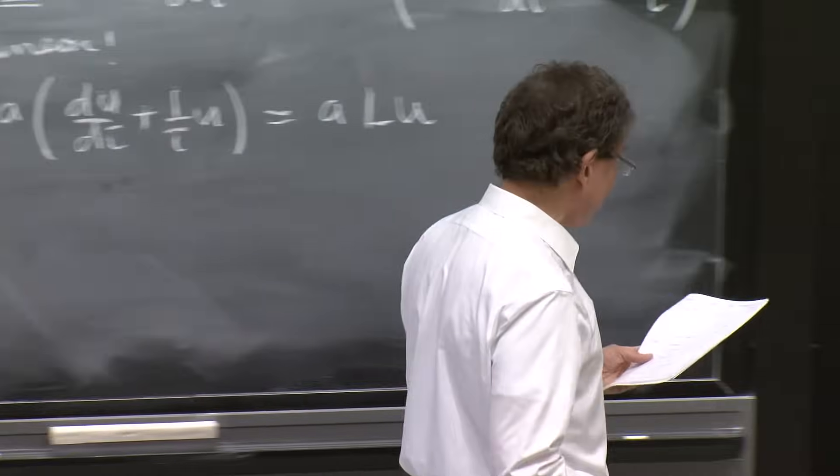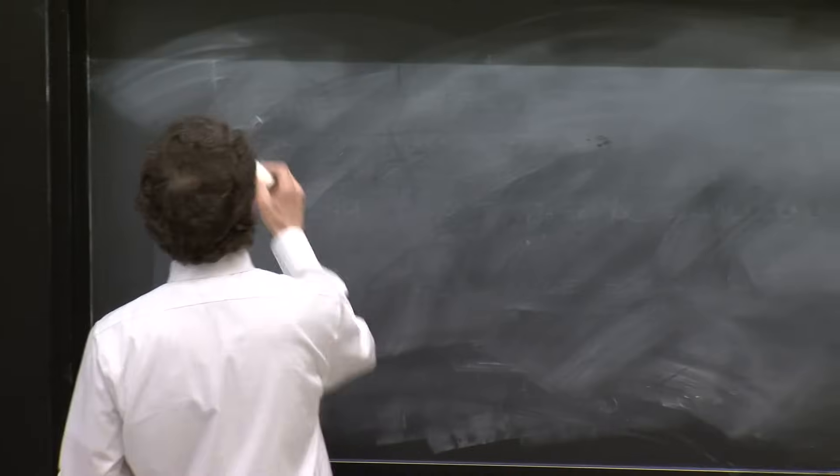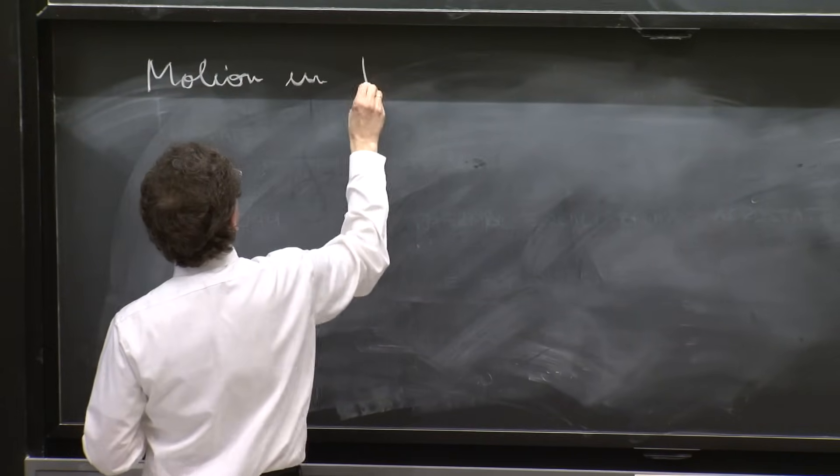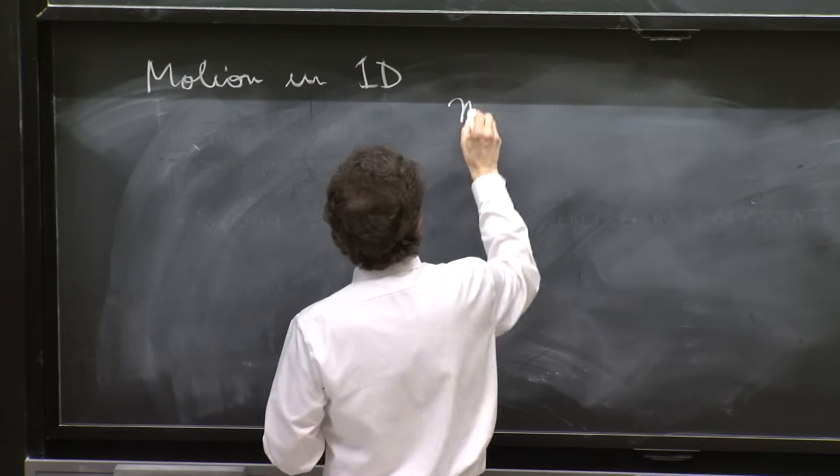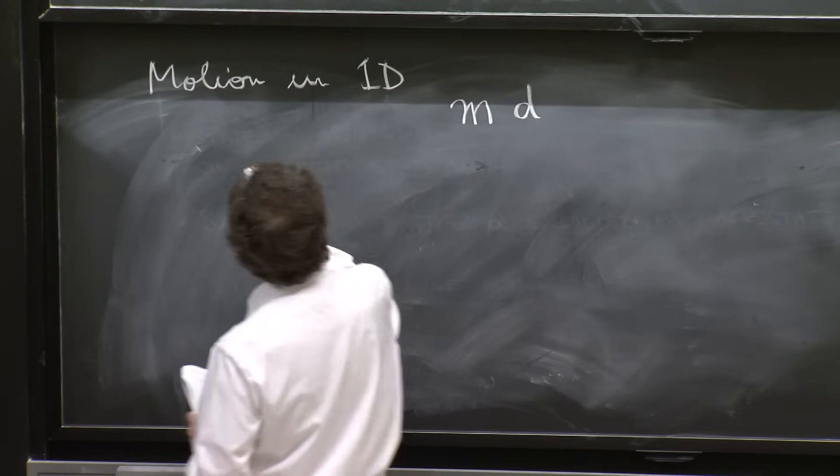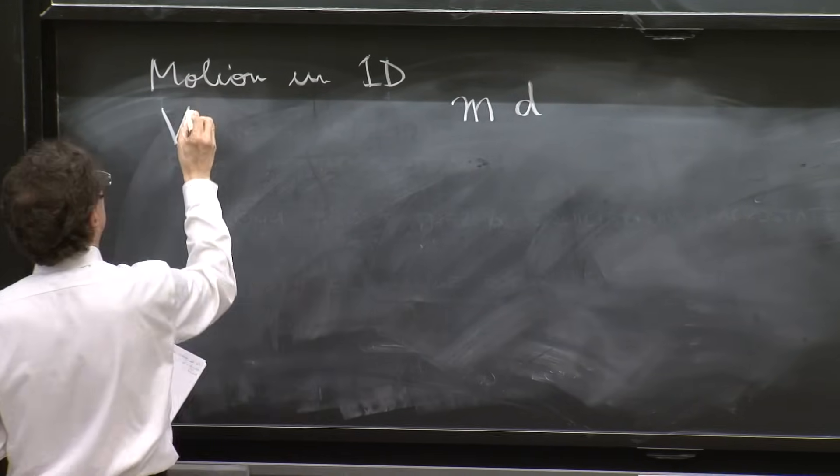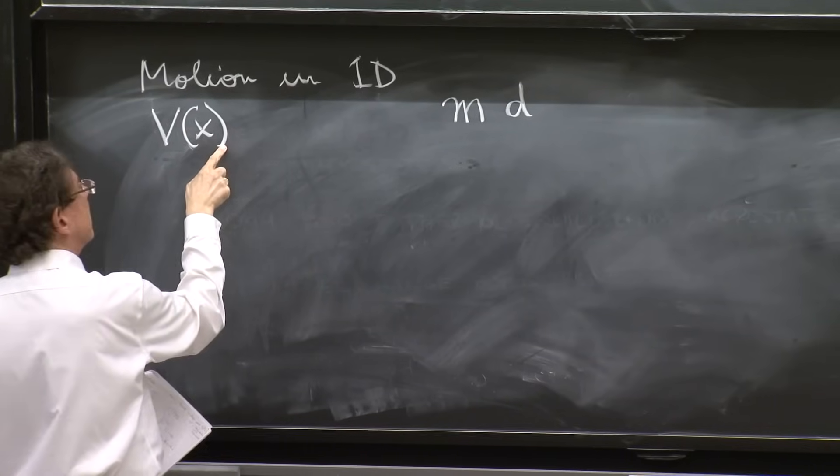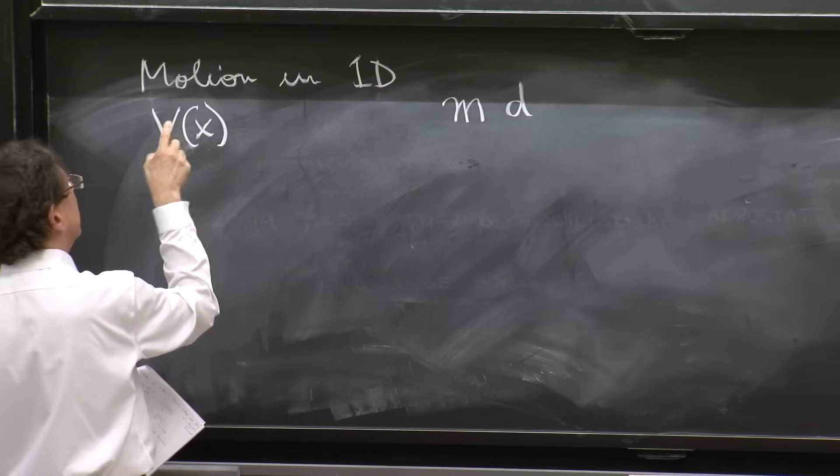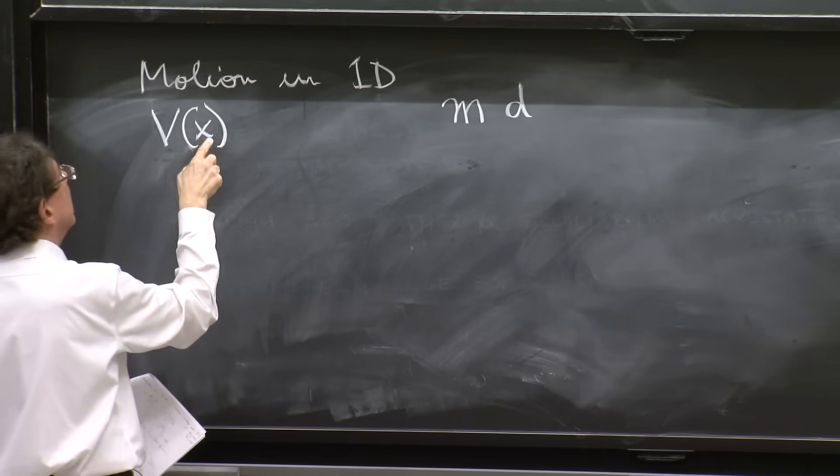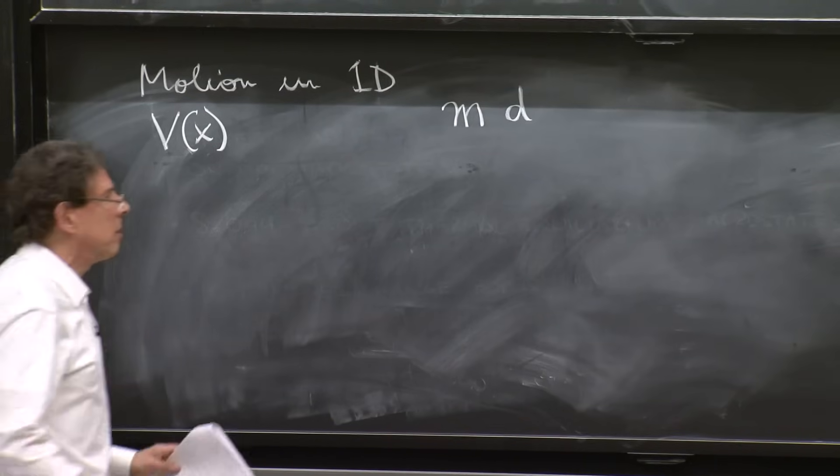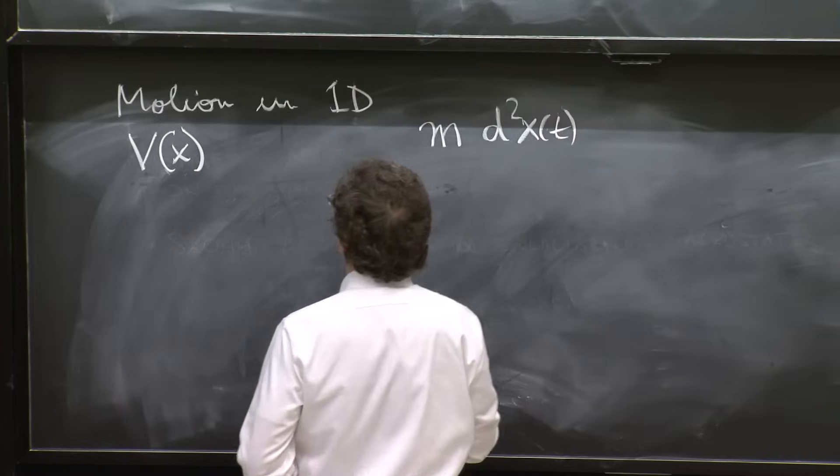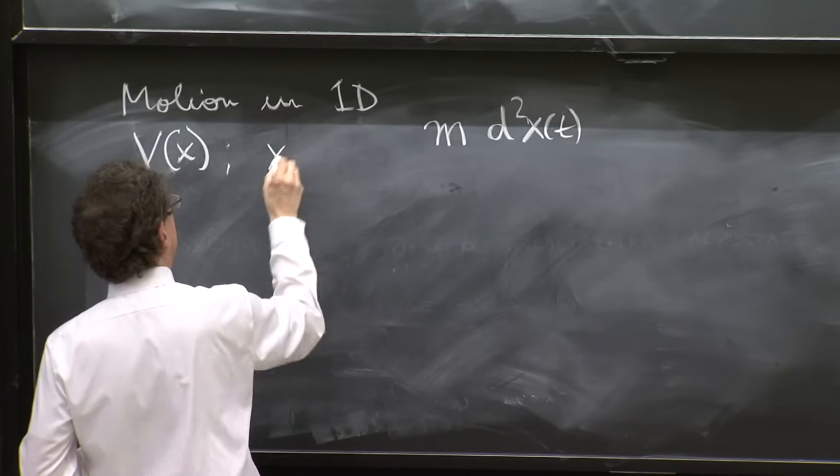Let me show you. So if you have motion in one dimension, in 1D, you have the equation of motion. Motion in one dimension under a potential v of x that is time independent. A particle moving in one dimension x under the influence of a potential v of x. The second, the dynamical variable, is x of t.